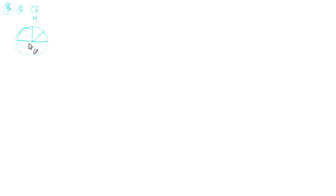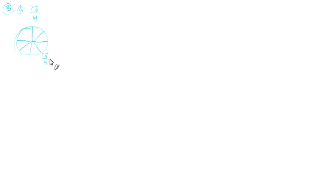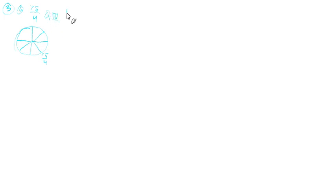Counting in increments of π over 4: 1, 2, 3, 4 — that's π. Here's 5, here's 6, here's 7. So 7π over 4. What quadrant is that? Quadrant 1, 2, 3, 4 — that's Quadrant 4.